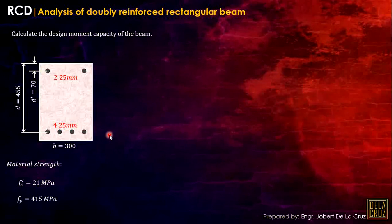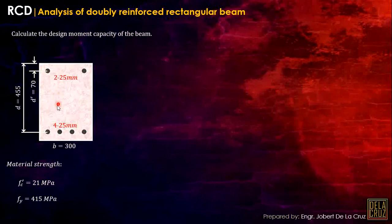As you can see, we have here 4 × 25mm diameter tension steel bars and 2 × 25mm diameter compression bars. We have the effective depth D, we have B, we have D'. The definition of D' is the distance from the extreme compression fiber of the concrete to the centroid of the compression bars.